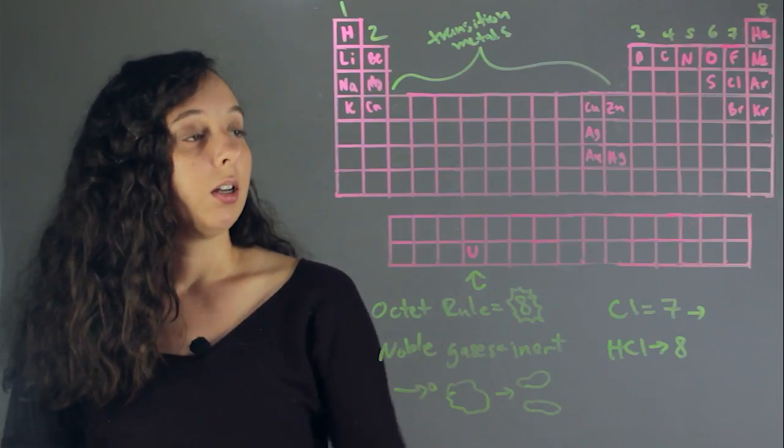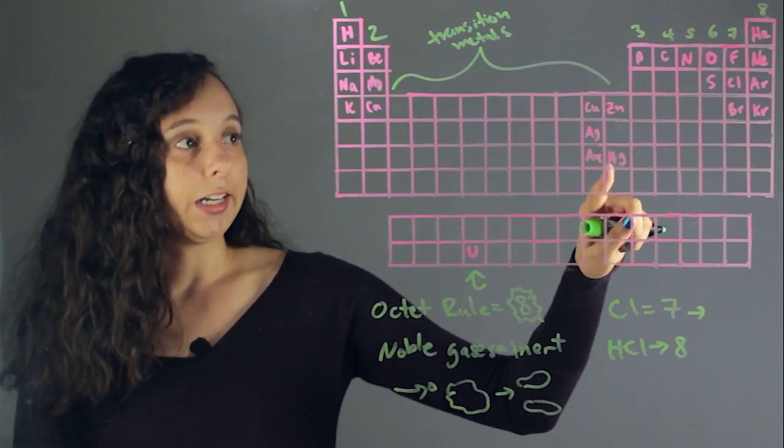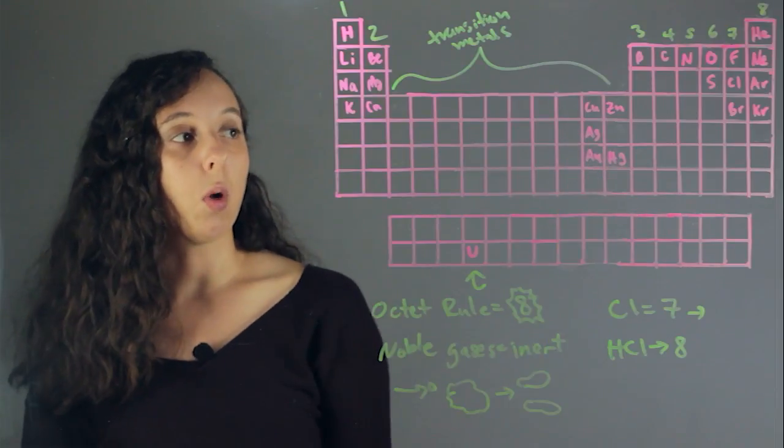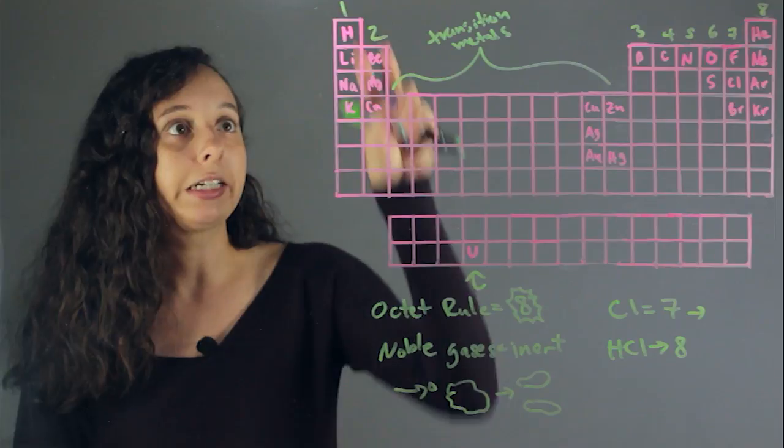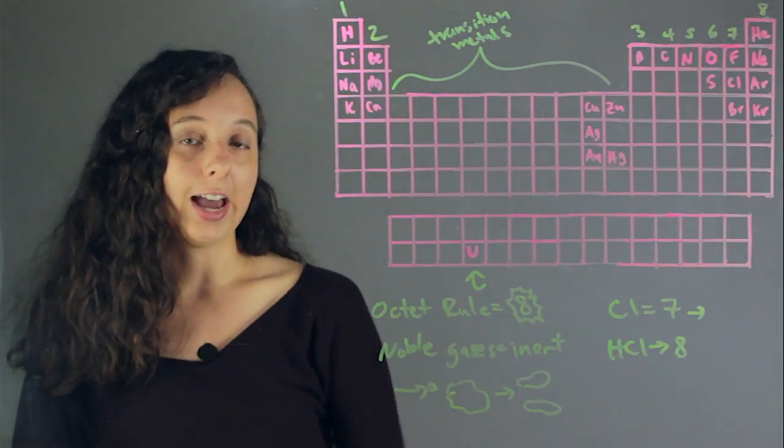In general, metals can also react. And usually these metals will want to lose electrons. However, they don't really function in the same clear cut octet rule way as these guys.